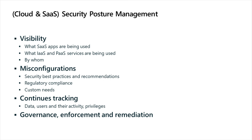Visibility and misconfiguration detection provide great value by themselves, but you cannot stop there. You always have to continuously track the activity and usage of those environments and applications — the data, the users, their activity, and their privileges. When there is an issue, you are alerted, and then you can govern, enforce, and remediate those issues, either manually or automatically blocking and remediating what you find.